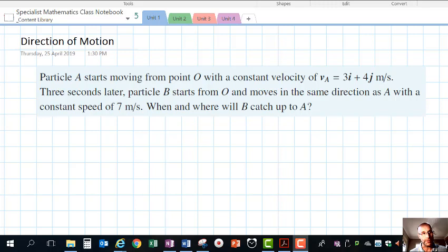We're dealing with vectors and this idea of direction of motion through two examples. We can see the first example here: a particle starts moving from reference point O with constant velocity given by this vector, 3i + 4j m/s. Three seconds later, particle B starts from the same point O and moves in the same direction as A with constant speed of 7 m/s. When and where will B catch up to A?